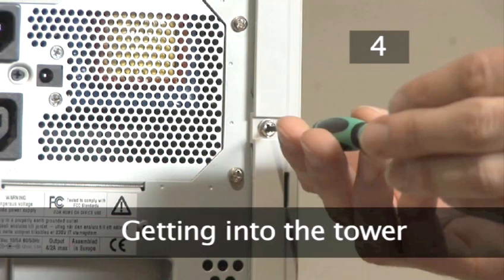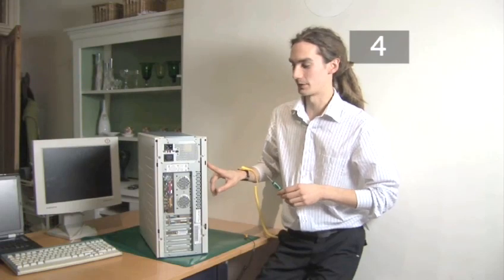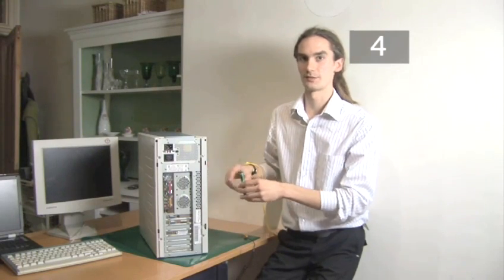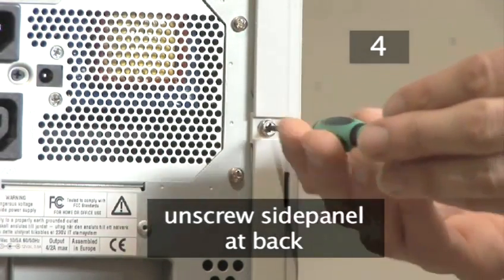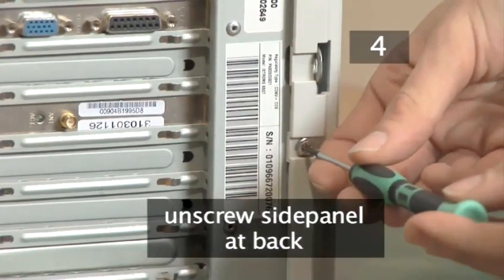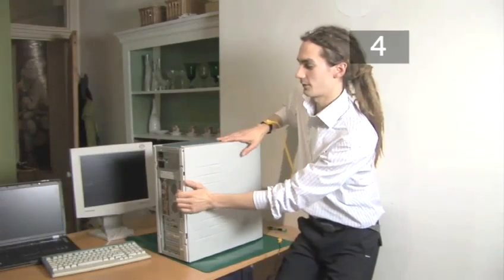To get inside your computer you need to remove the right hand panel as you look at the back of the computer. To do this use an electrical screwdriver to remove the two screws here and here. Now simply slide off the side panel.